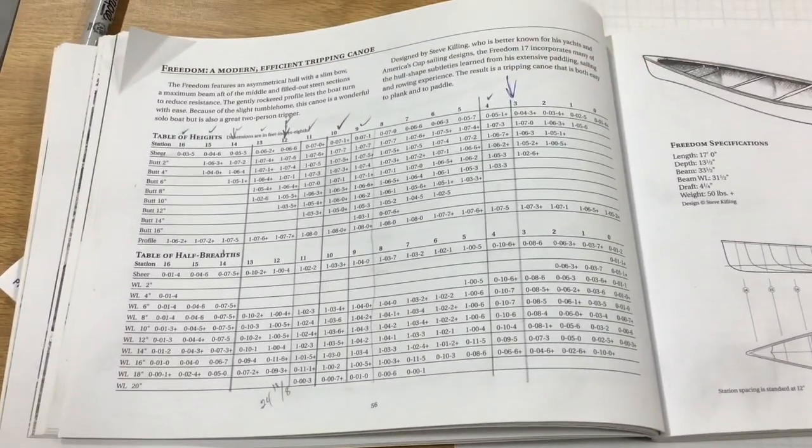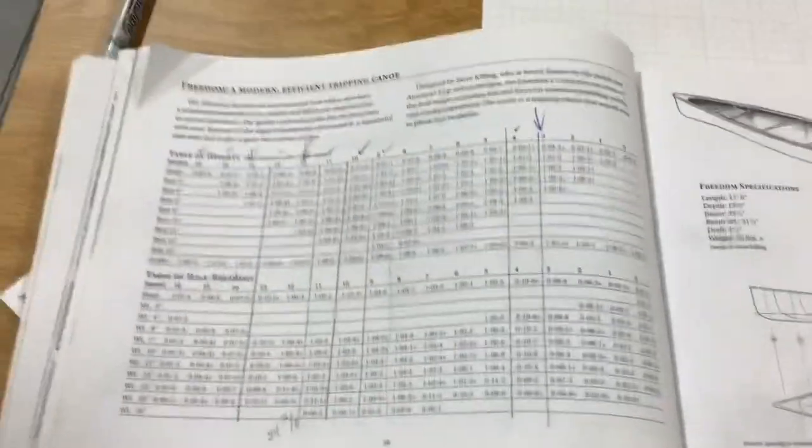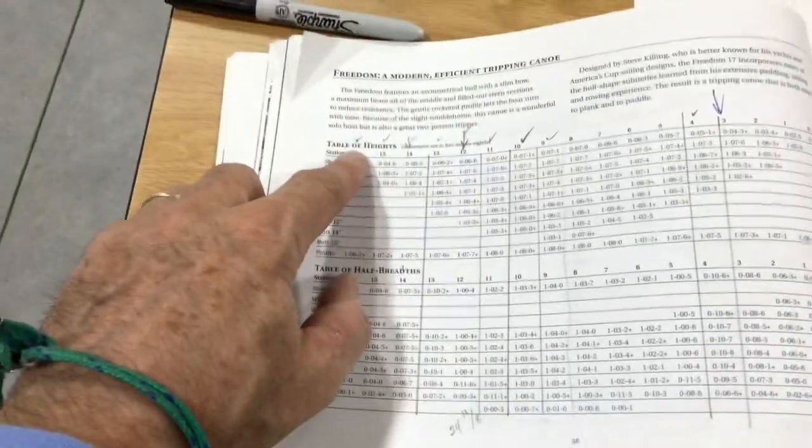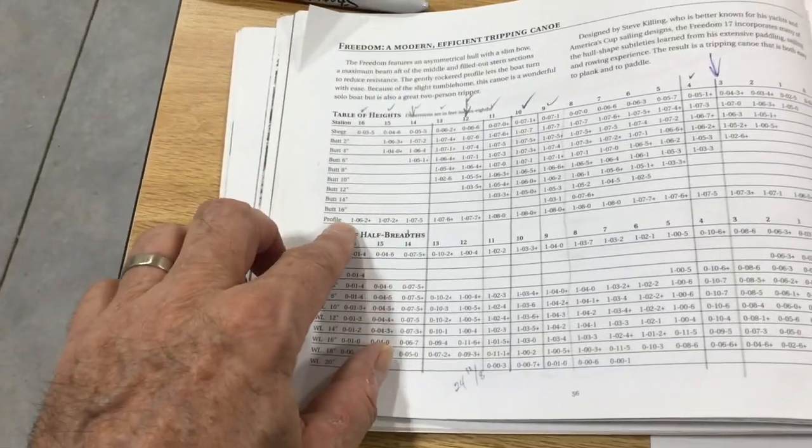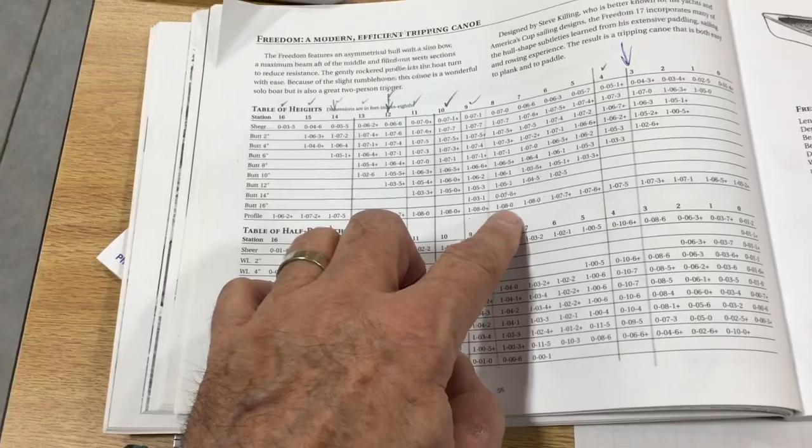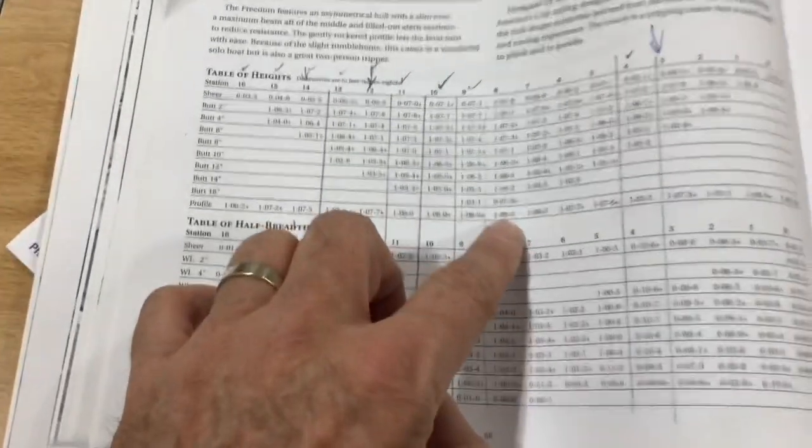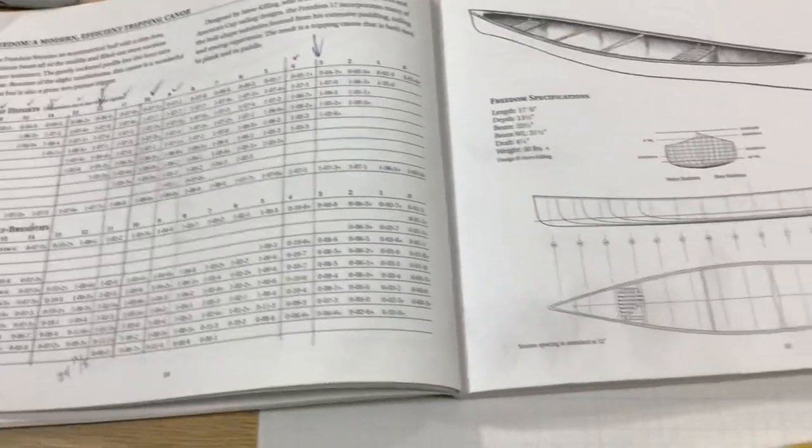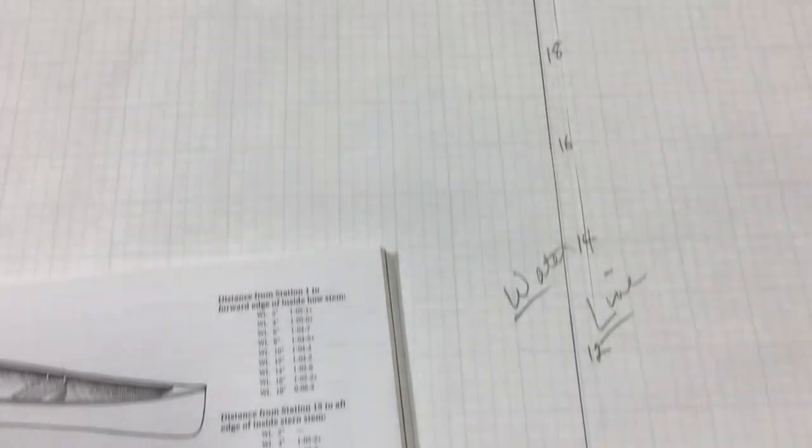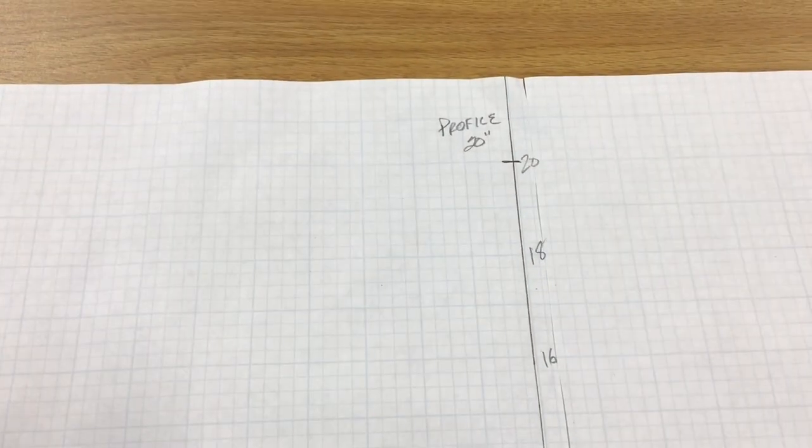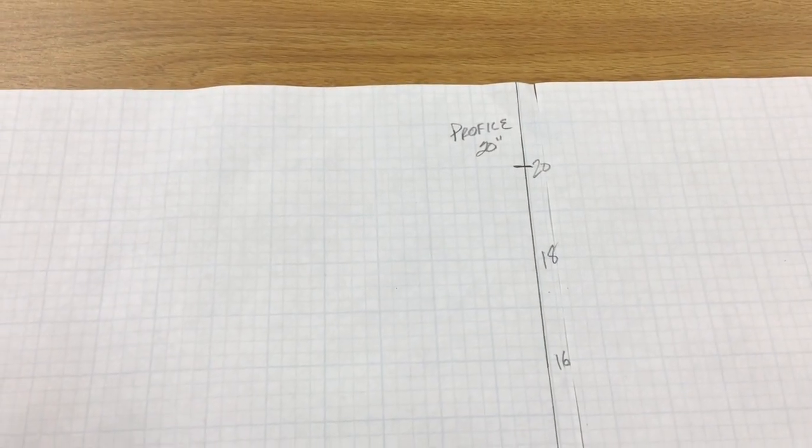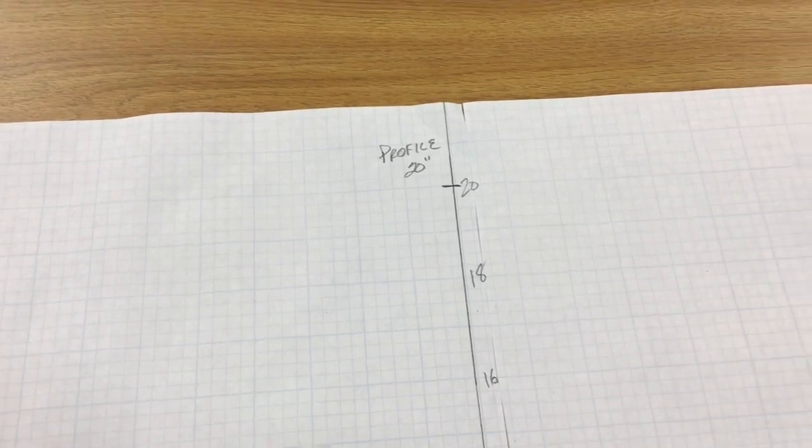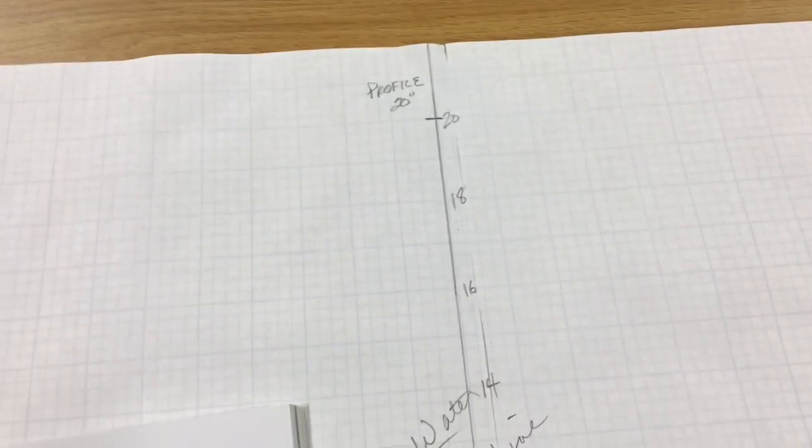One more thing. How did we know that the profile was 20 inches? In the table of heights, we come down to profile, come across to number eight, and it is one foot eight inches. Well, one foot eight inches, that's 20 inches. So from the very bottom down here, we go all the way up here, 20 inches. We know that that is the deepest part or the highest part of this particular mold.